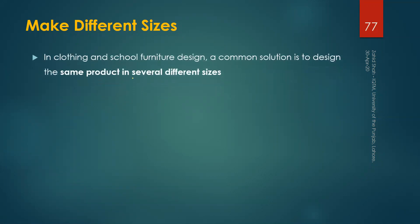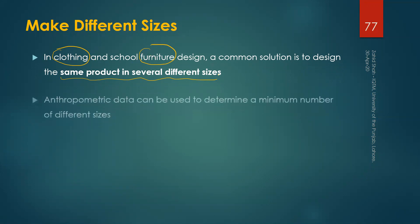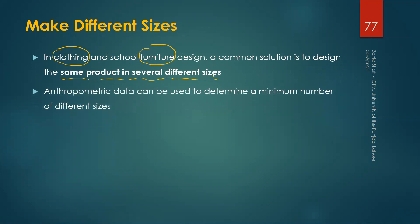Make different sizes means to make the same product in several different sizes. This principle applies, for example, to the design of clothing as well as to furniture design. Anthropometric data can be used to determine a minimum number of different sizes. For example, in the case of clothing we might decide four sizes: small, medium, large, and extra large. Once we have decided the number of sizes, we then have to decide the quantity of each size to be produced.